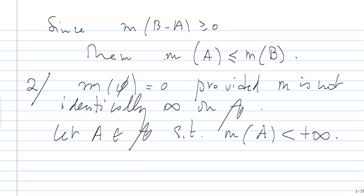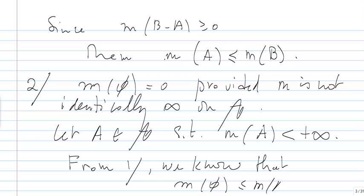So, let A belong to the class such that the measure of A is finite. Then what do we have? From one, we know that M of the empty set, which is less than or equal to the measure of A, is going to be less than infinity. So the M of the empty set will also be finite.